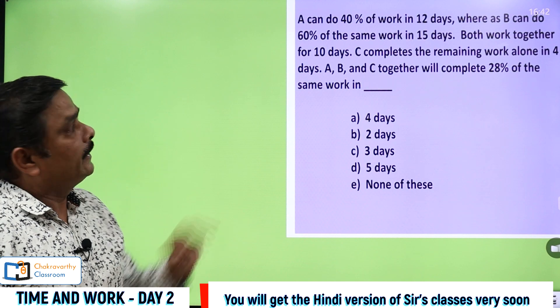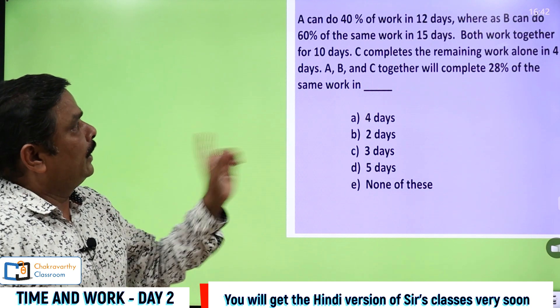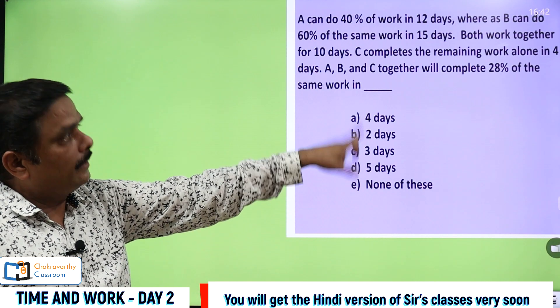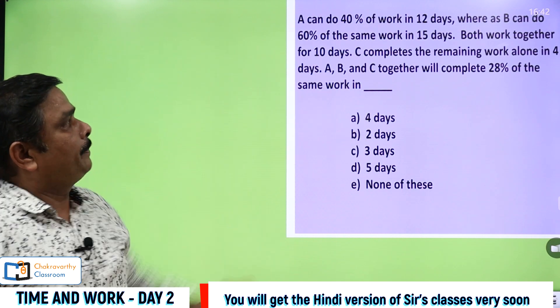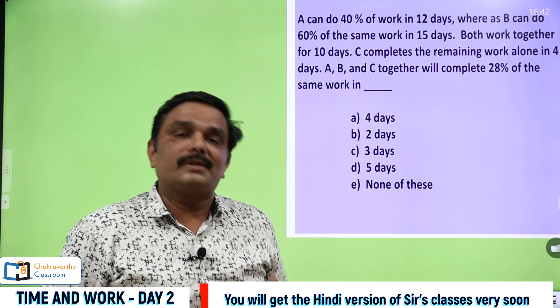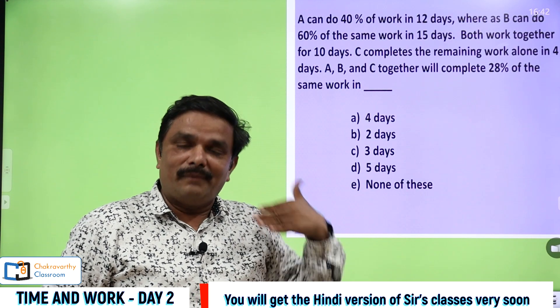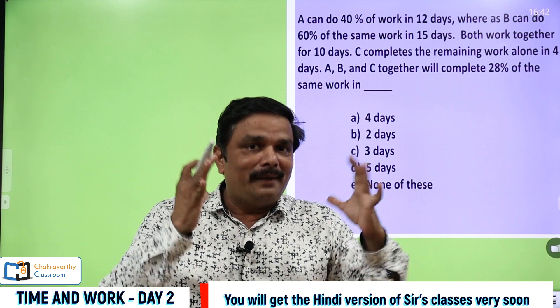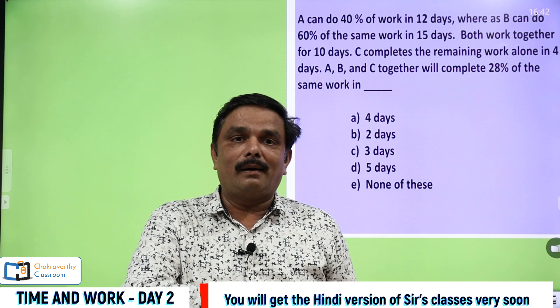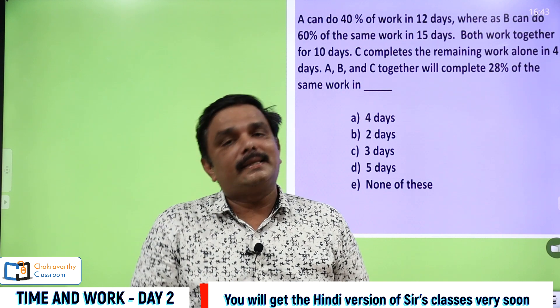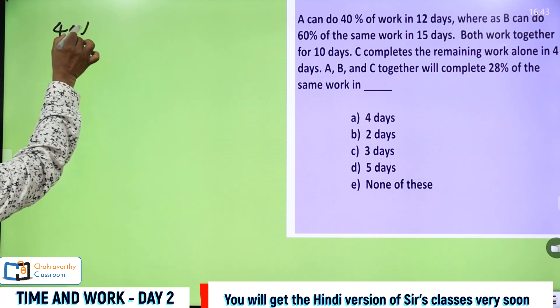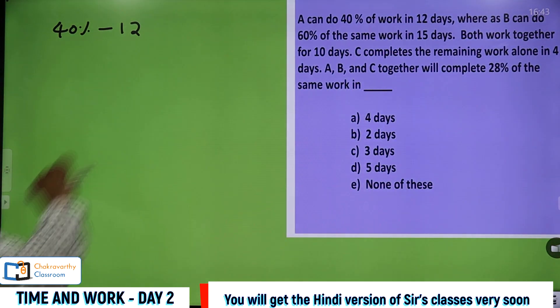What exactly they have given in continuation? Both work together for 10 days. Then C completes the remaining work in four days. Then finally, question is A, B and C together will complete 28% of the whole work in how many days. While reading the question only, you should get the blueprint of solution in your mind. Only then you can go for speed and accuracy in the examination.